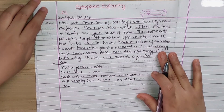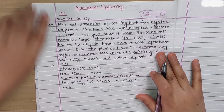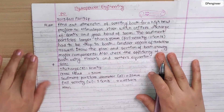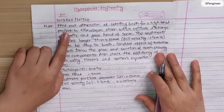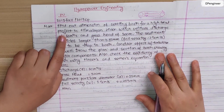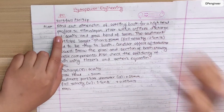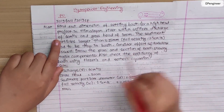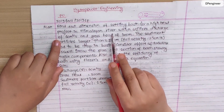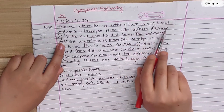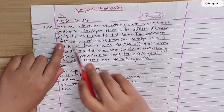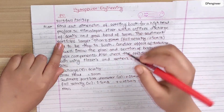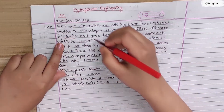Today we have a question about hydropower engineering, 2019 fall or 2019 spring. The question is to find the dimension of the settling basin for a high head project in a Himalayan river which utilizes a discharge of 60 cubic meters per second and a gross head of 300 meters.